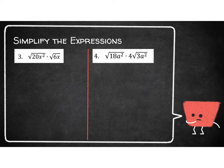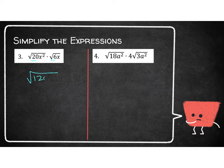Let's take a look at number 3. I have the square root of 20x squared times the square root of 6x. My outsides are just 1 and 1, so I don't need to worry about those. But the insides — I have 20 times 6, which is 120. And I have x squared times x to the 1st, which is x to the 3rd.